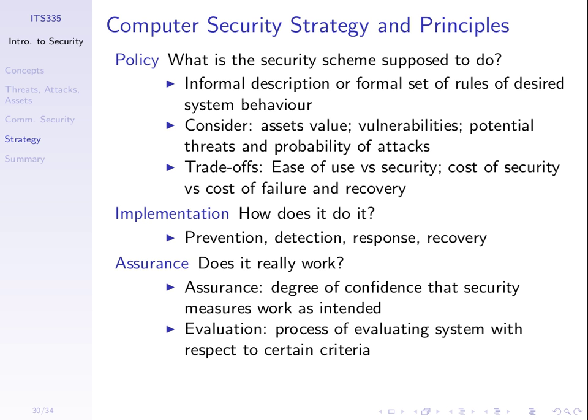In setting up a security policy, an organisation needs to consider what they're trying to protect. We said there are four types of assets: software, hardware, data, and the communication lines. For SIT, student grade information and student contact information are important assets we shouldn't release publicly. Financial information is an important asset, and the software we run on servers is another. We have a number of assets we want to protect, and we need to consider which ones are most important and try to allocate a value to them.